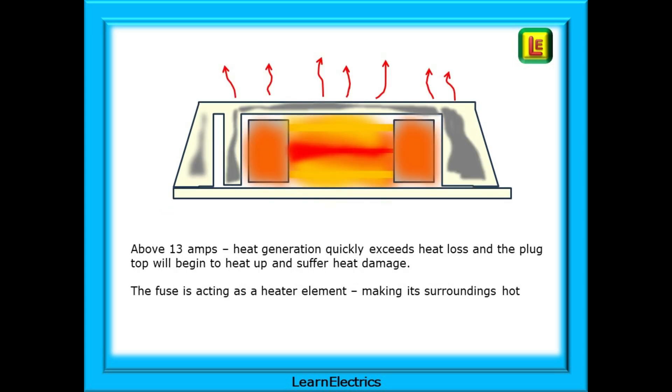Think of the fuse at 13 amps of current as acting like a 1 watt heater, and the plug-top can just about lose this 1 watt of heat under ideal circumstances. Above 13 amps and the heat generation quickly exceeds heat loss and the plug-top will begin to heat up and suffer heat damage. There is more heat being generated inside the plug than can be lost into the air and surroundings. The fuse is acting as a heater element, making its surroundings hot, but it still might not be hot enough to cause the fuse wire to melt.